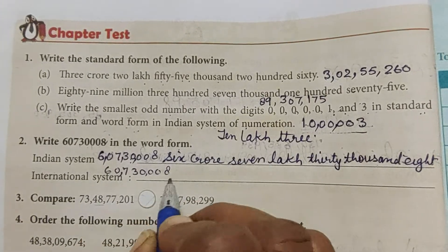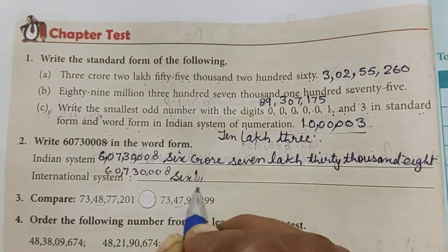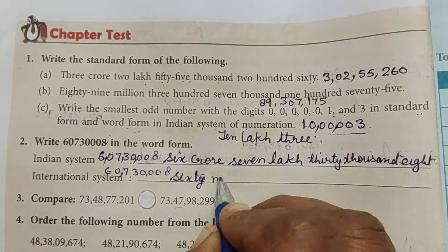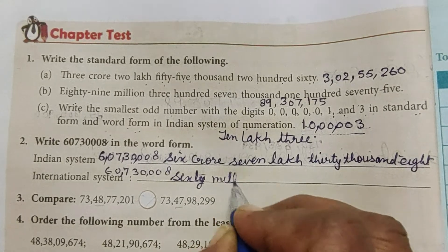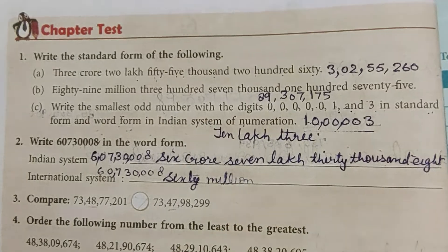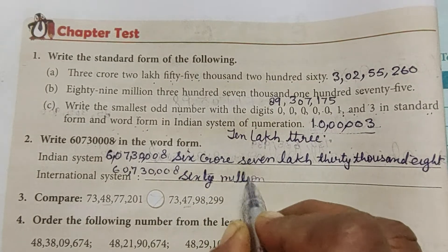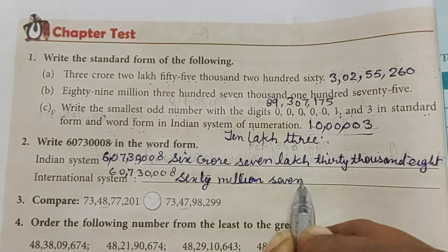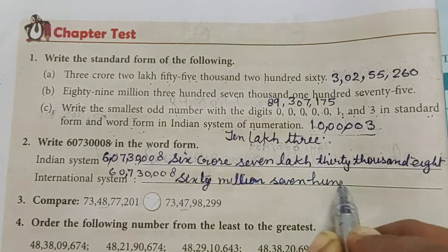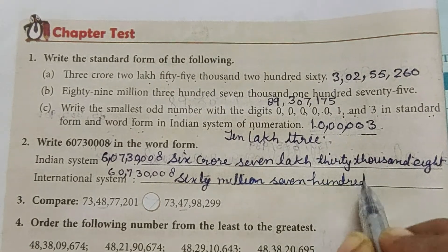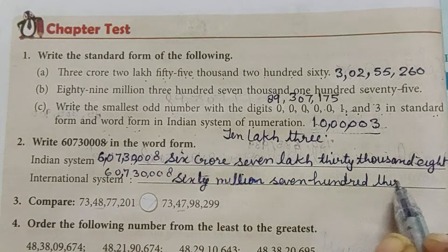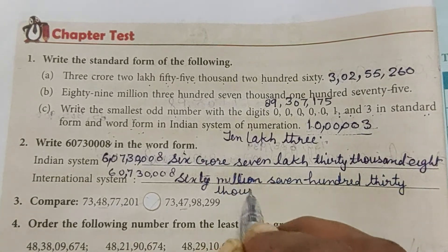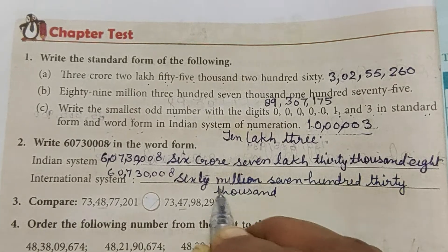In the international system, the same number 607,300,008 is written with commas as 607,300,008. It reads: sixty million seven hundred thirty thousand eight.